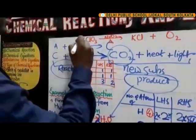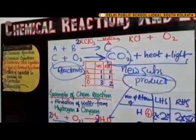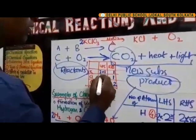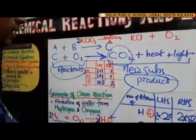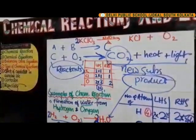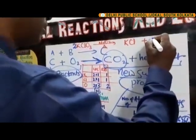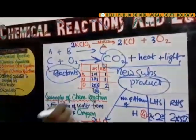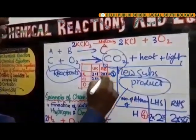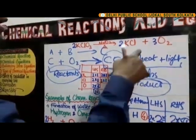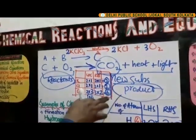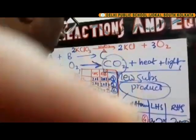If we multiply KClO3 on the left-hand side by 2, we get: K = 2, Cl = 2, O = 2×3 = 6, giving a total of 10 atoms on the left-hand side. On the right-hand side, multiplying KCl by 2 and O2 by 3: K = 2, Cl = 2, O = 3×2 = 6, giving 6 + 2 + 2 = 10 total atoms on the right-hand side. Both sides now equal 10 atoms, so the equation is balanced: 2KClO3 → 2KCl + 3O2.